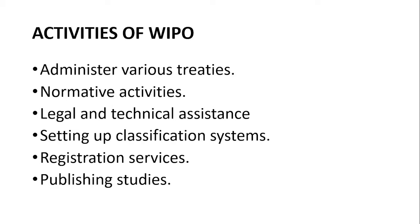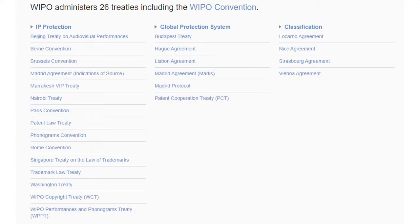WIPO is a global organization engaged in many activities. Its main activities include: administering various treaties; normative activities such as setting norms and standards for the protection of IP and enforcement of IPR, including evolving norms for the protection of traditional cultural expressions and genetic resources; providing legal and technical assistance to member states; and setting up classification systems for patents, trademarks, and industrial designs to enable quick and easy searching of patent mentions.